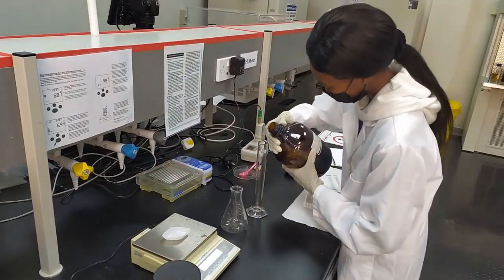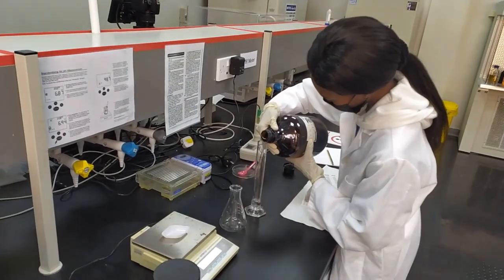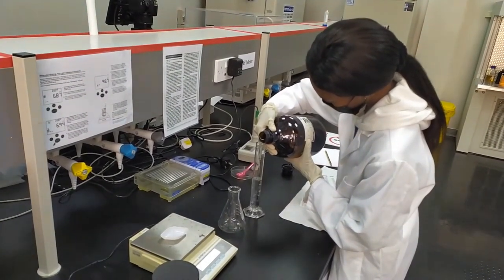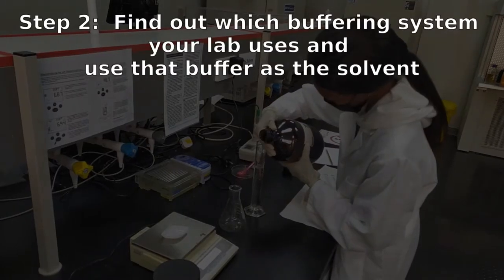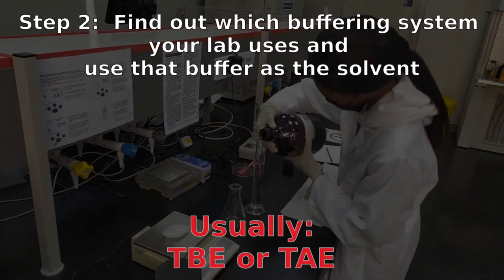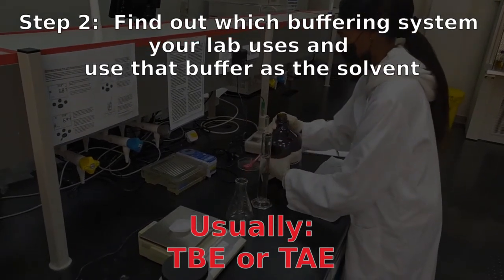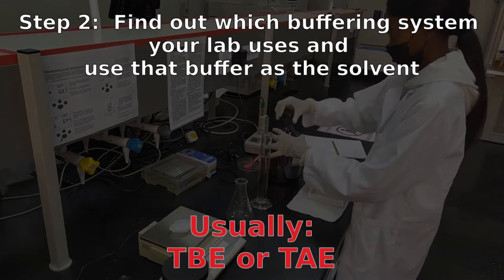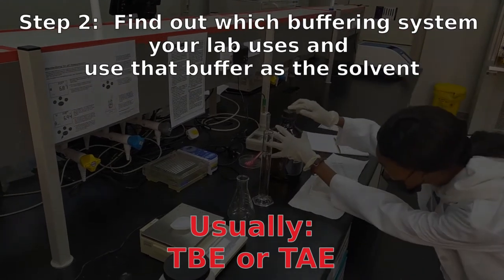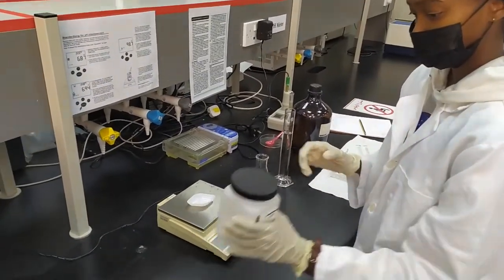Now that we have our calculations done, we can start to prepare the solution. The first thing you want to do is check what kind of buffering system your lab will use. So, it's usually either a TBE buffer or a TAE buffer. You should never use water. Always make sure you are using the buffer that will be used for running the gel. So, once you have that buffer selected, you can measure that out.